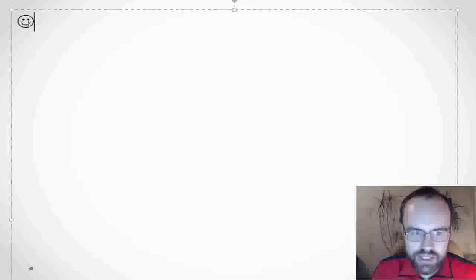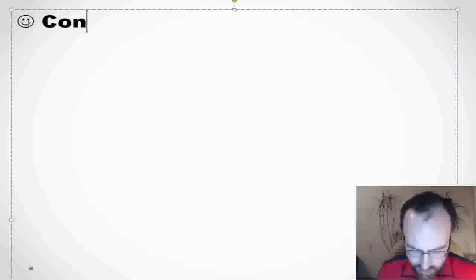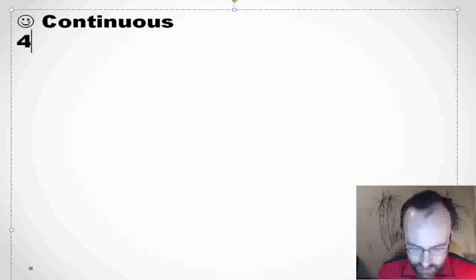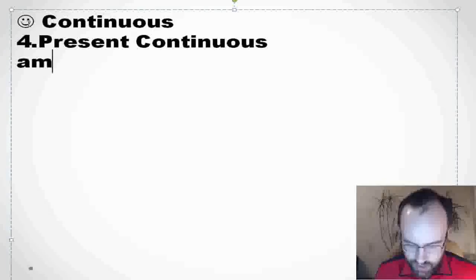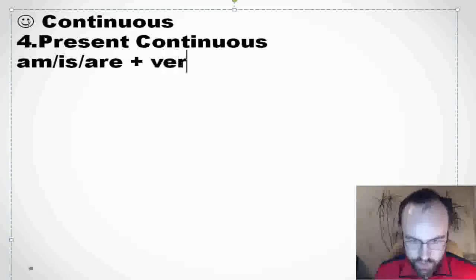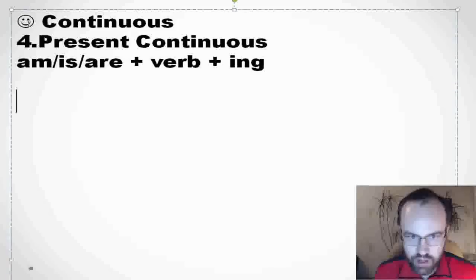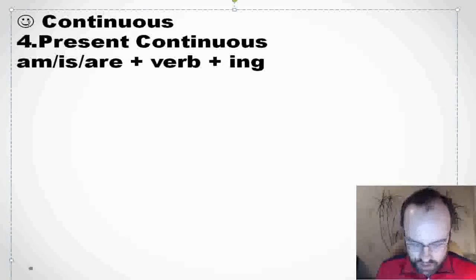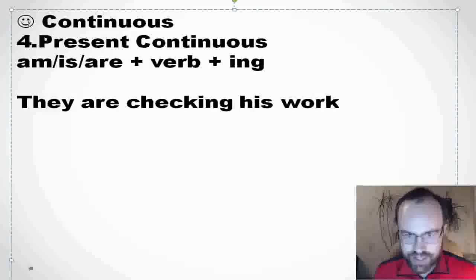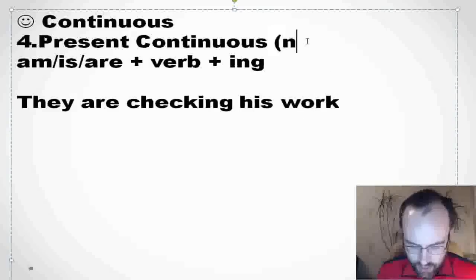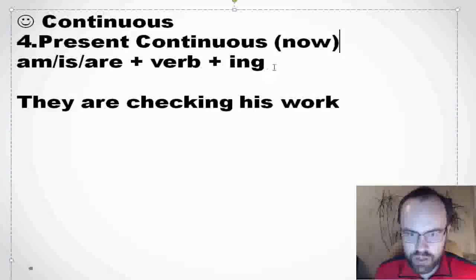The next group is continuous. Present continuous — how do we form it? Am/is/are plus verb plus -ing. I am, he/she/it is, we/you/they are. For example: they are checking his work. It means it's happening now, at the moment.